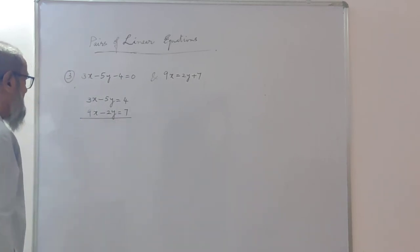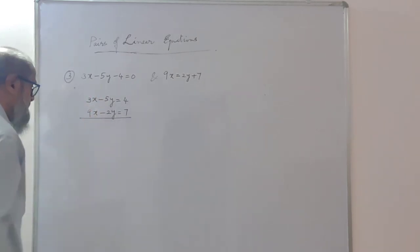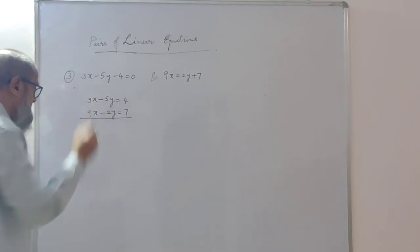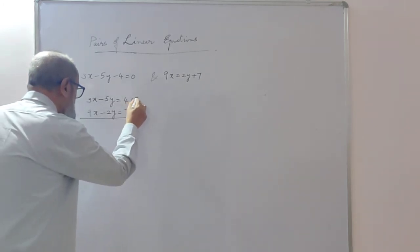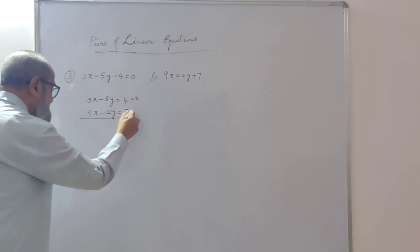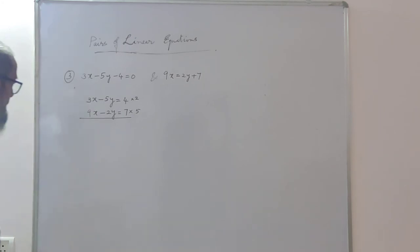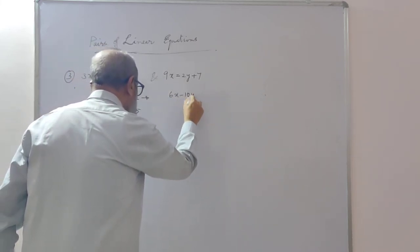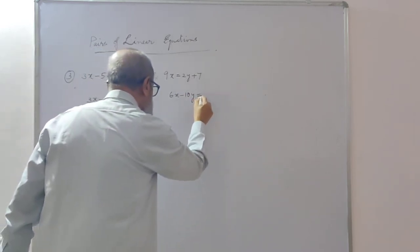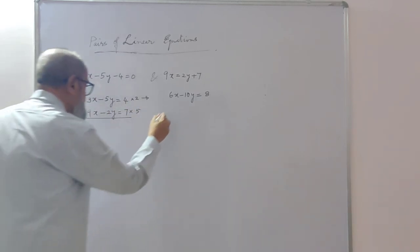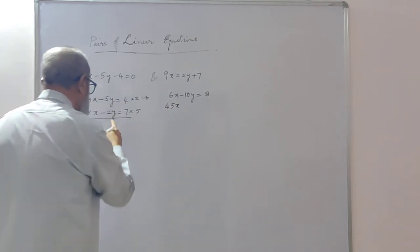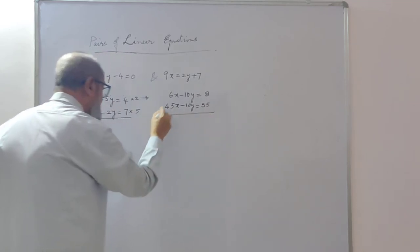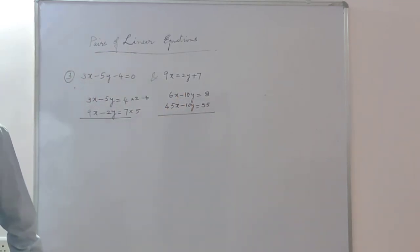Both y terms are negative. They can be eliminated by subtracting, but first the coefficients must be made the same. I will multiply the first equation by 2 — giving 2×5 = 10y — and the second equation by 5 — giving 5×2 = 10y. So the first equation becomes 6x minus 10y = 8, and the second becomes 45x minus 10y = 35.